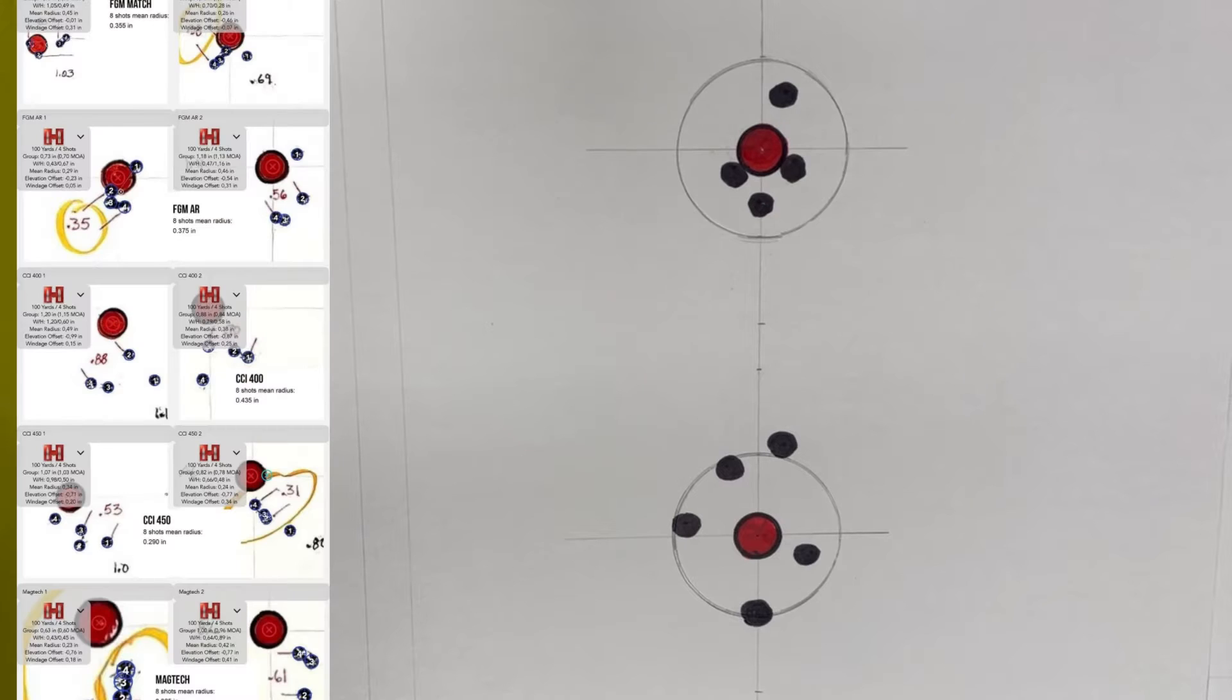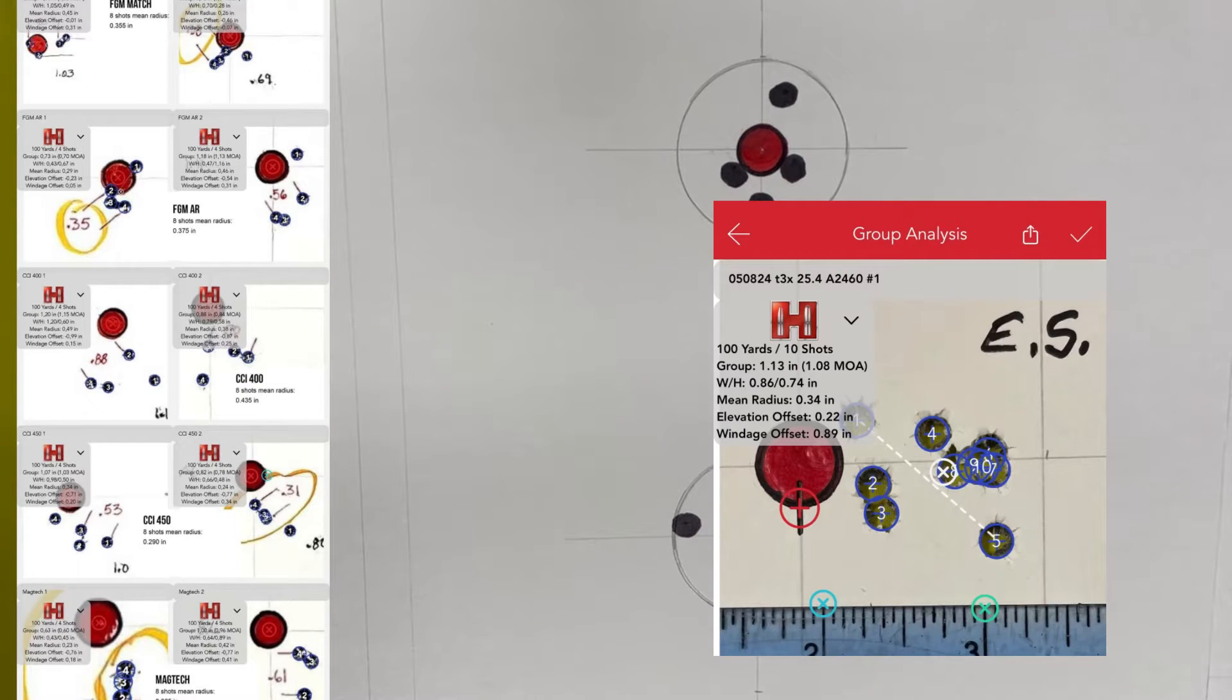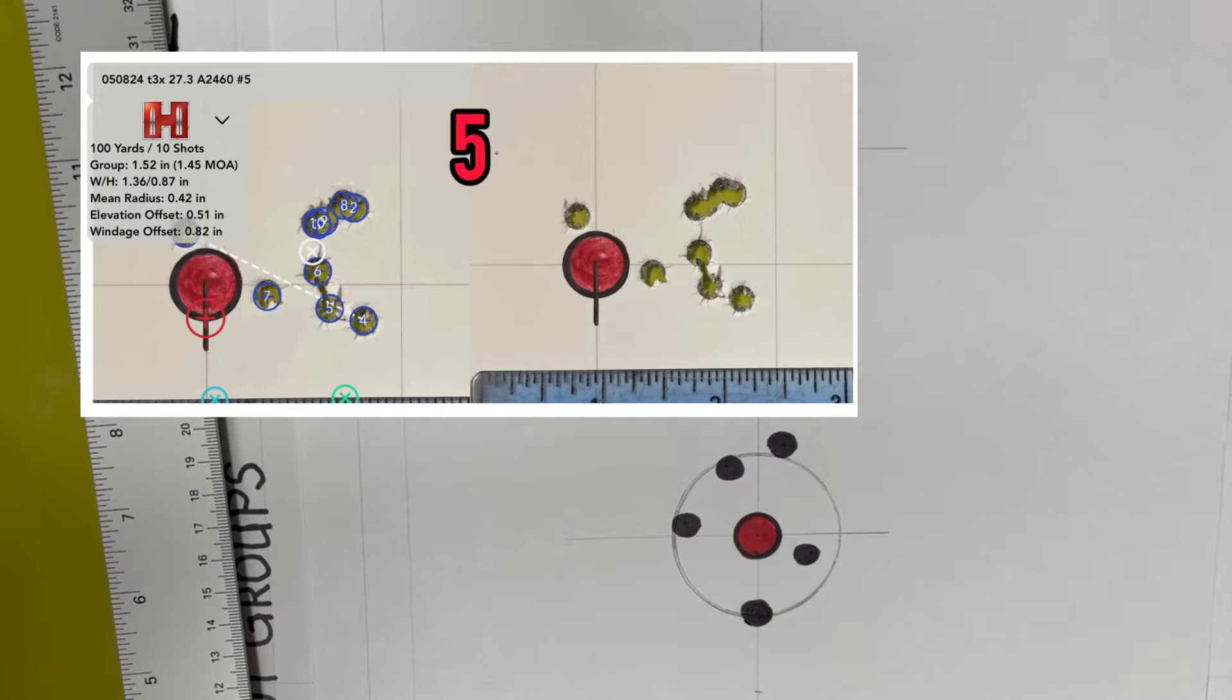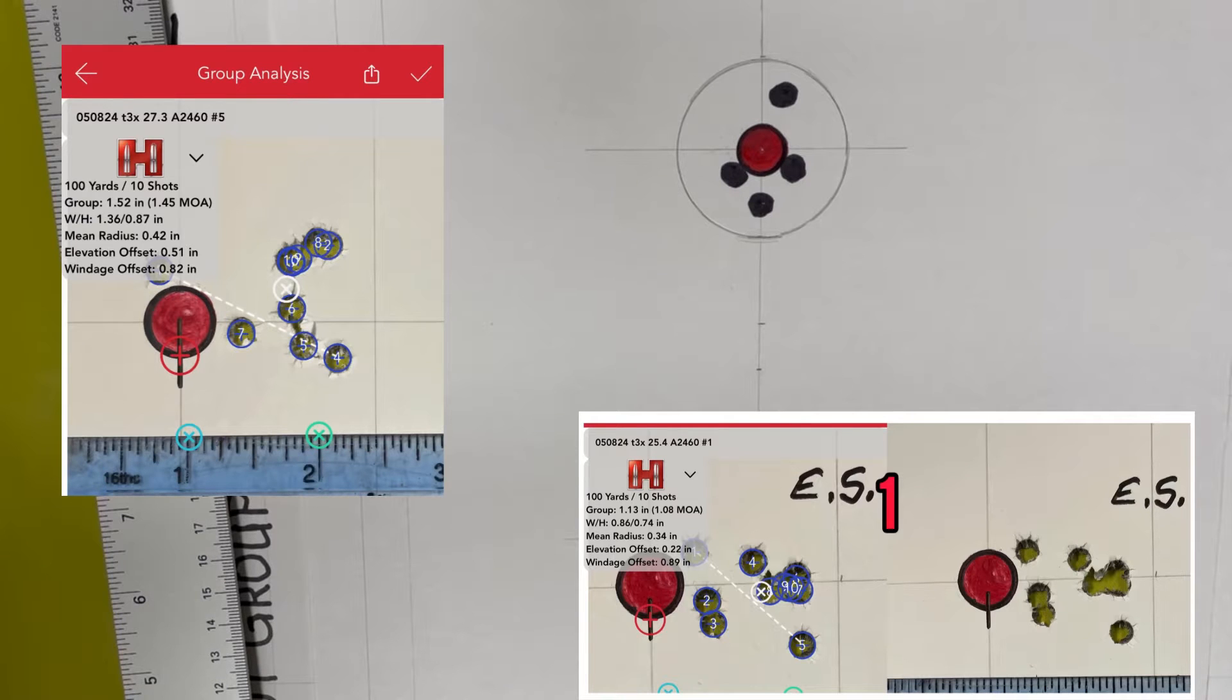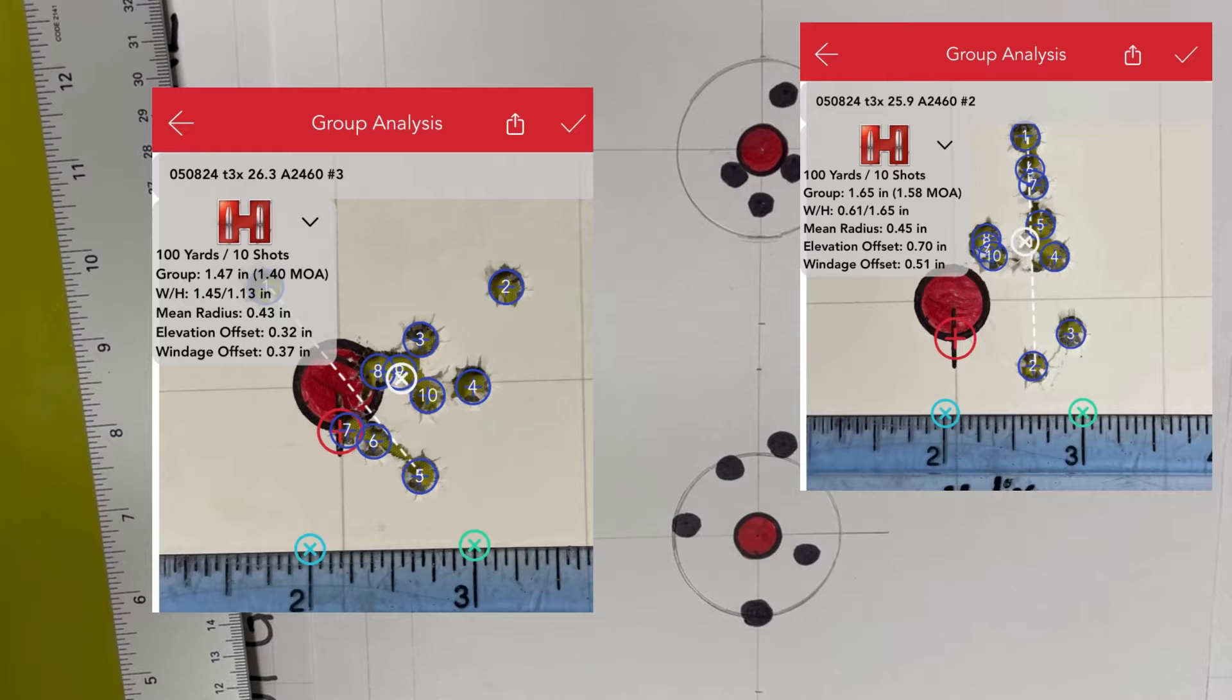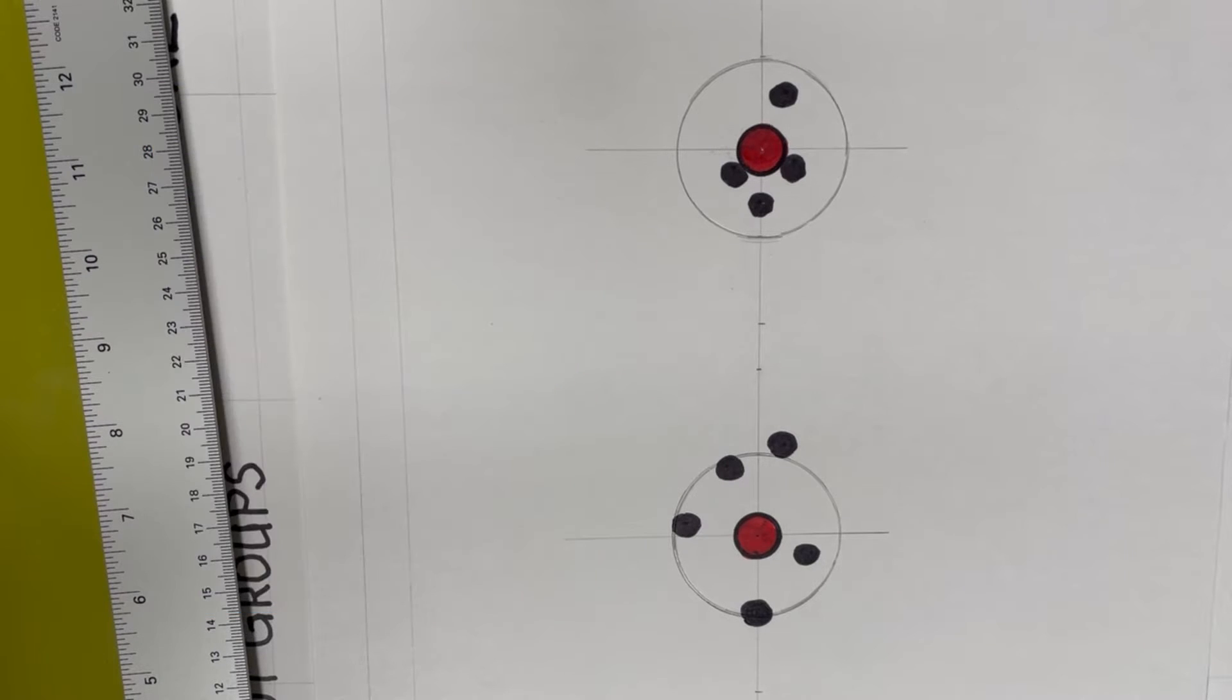As those of you who watch my videos know, lately I've been doing load testing and when I measure, I measure not just by group size, but by something called mean radius. Some of you have commented on that, how that's a more accurate, better system, and I've gotten a request to talk a little bit more about this and explain what it is.